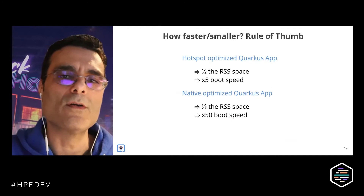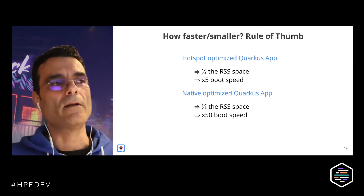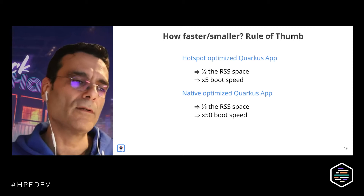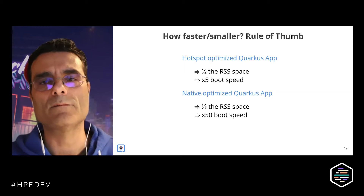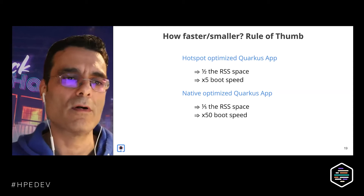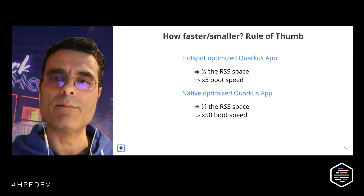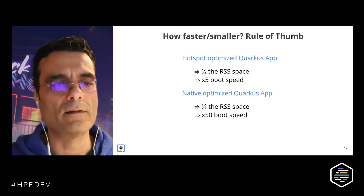This is where Quarkus really shines — if you stay within the Quarkus extension ecosystem, you're practically guaranteed that whatever you build will compile to native with just one flag, because Quarkus extensions know how to avoid the things GraalVM doesn't like and provide the right hints for GraalVM to do its work. As a rule of thumb: porting a standard microservice to Quarkus will cut memory to about half and start it about five times faster, so you could reduce your cloud bill to half.